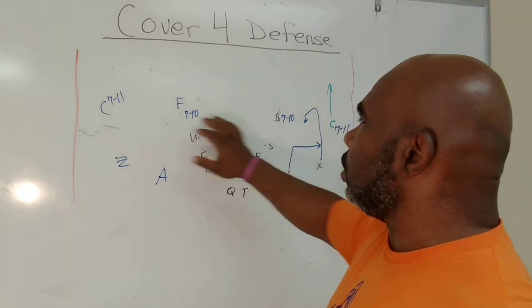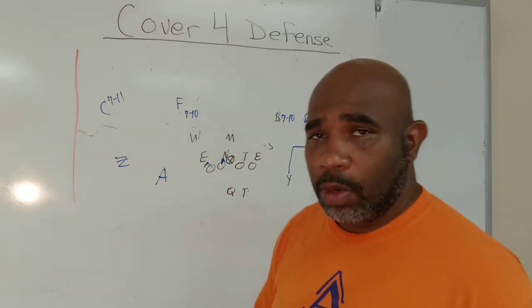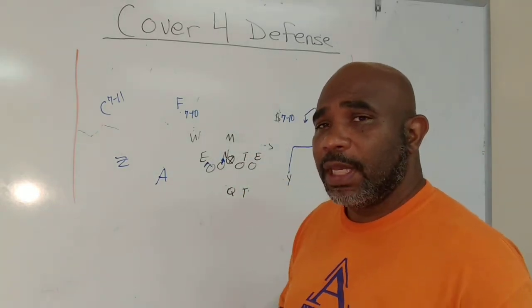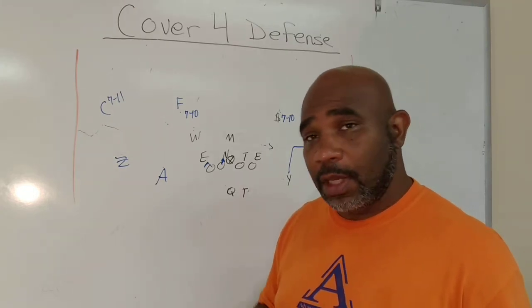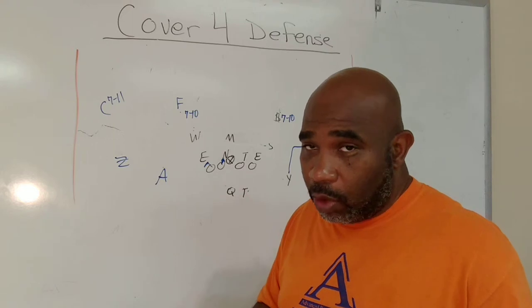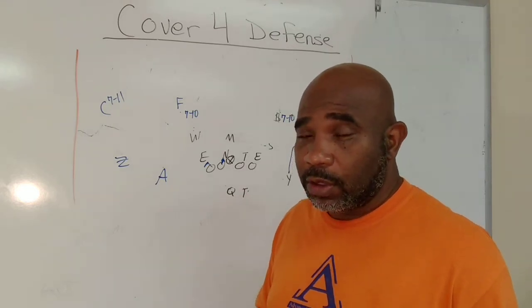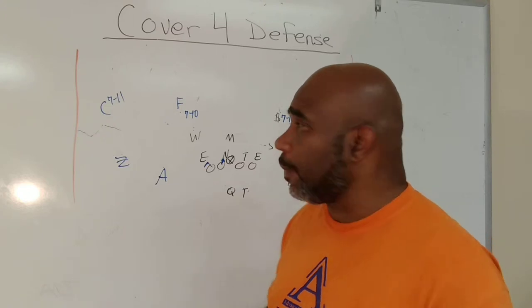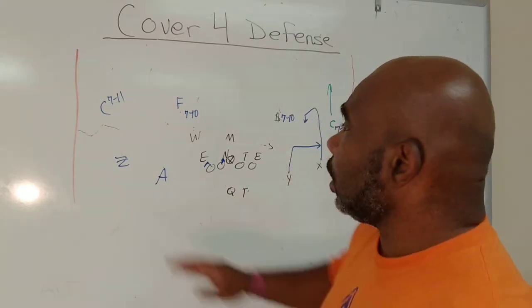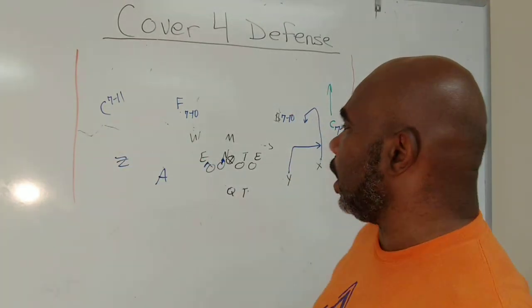Lots of teams will play these two safeties aggressive. Remember, they're also involved in the run game, 7 to 10 yards off the ball. So you offensive coordinator types, that's one way you'll know a team is running quarters versus cover two. Those safeties in cover two tend to be a little bit further off the ball normally. And again, this corner is 7 to 11 as well.